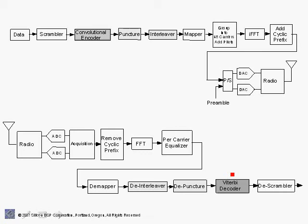So what do we gain by using puncturing? Puncturing is useful in cases where we have higher SNR, in which case we can use a higher data rate and achieve a better throughput, exploiting the fact that we have higher SNR by actually throwing away some of the redundant bits but maintaining enough so that the Viterbi decoder can still achieve error correction. In the following we will explain how puncturing works and how it can improve throughput, especially when the SNR or signal-to-noise ratio is high.